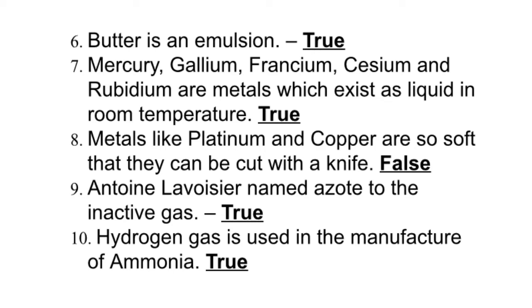Eighth, metals like platinum and copper are so soft that they can be cut with the help of a knife - no, it is false. They cannot be cut, they are hard and lustrous. Rather you have sodium, potassium, magnesium which are soft metals. Ninth, Antoine Lavoisier named azote to the inactive gas - yes, true, while he was doing the experiment on constituents of air. Tenth, hydrogen gas is used in the manufacture of ammonia - true.